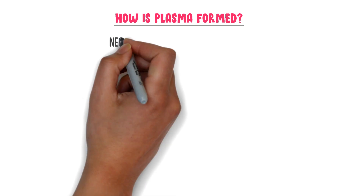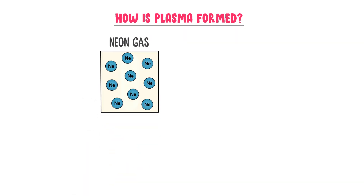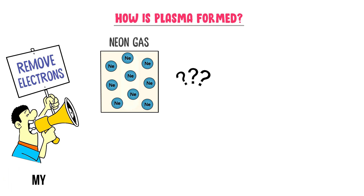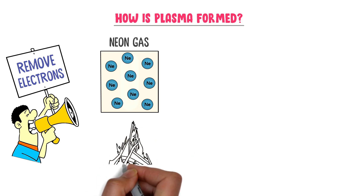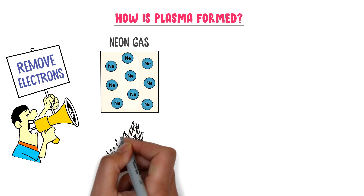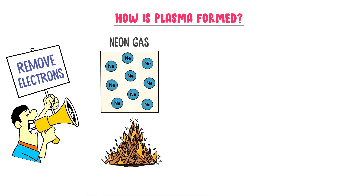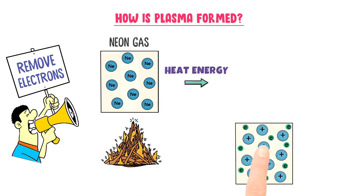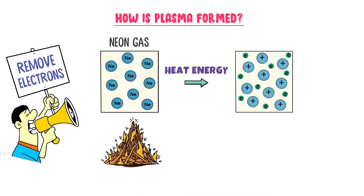Consider some atoms of neon gas. I am interested to remove electrons from these atoms. In order to knock down electrons from these atoms, I need to provide a very high amount of heat energy to these atoms. Once they absorb heat energy, electrons will be removed from them.